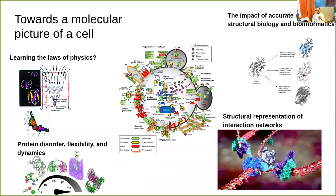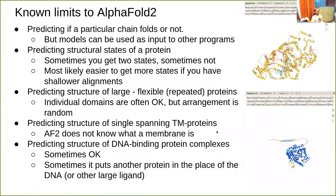What has AlphaFold been used for? Now that we have accurate models of protein structure for almost everything, we can start building networks and signaling pathways in cells, and maybe learn something about protein physics — though AlphaFold doesn't use any physics directly. We also realize that a large part of proteins are very flexible, and this flexibility happens on many timescales. In our lab we have worked on finding new ways of sensing interactions — finding something interesting about interactions — for which these high-accuracy models are very important.